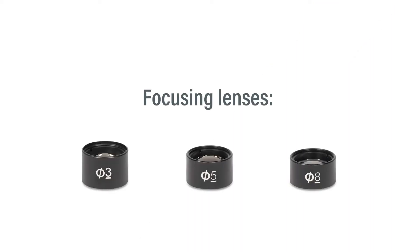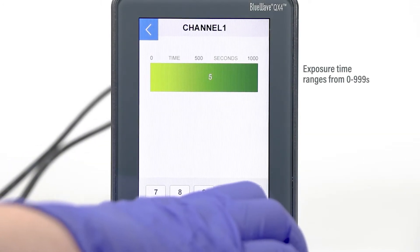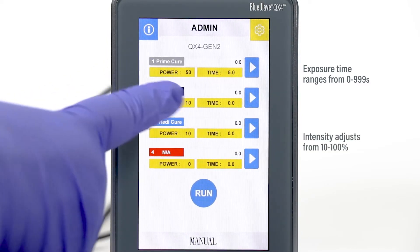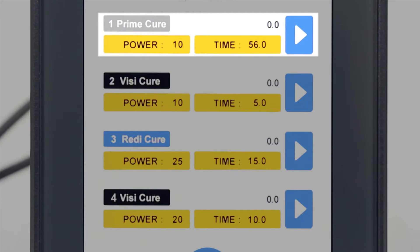LED heads can be outfitted with 3, 5, or 8 millimeter diameter focusing lenses to tailor the spot size to the specific application. For maximum curing flexibility, exposure times and intensity settings can be adjusted independently for each of the four LED heads.